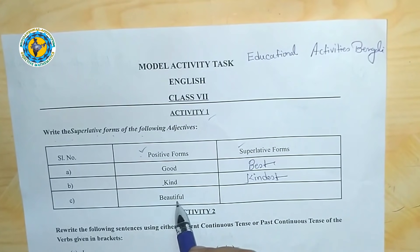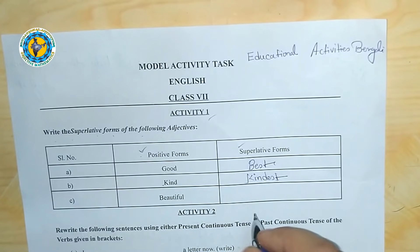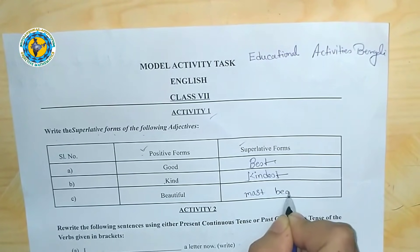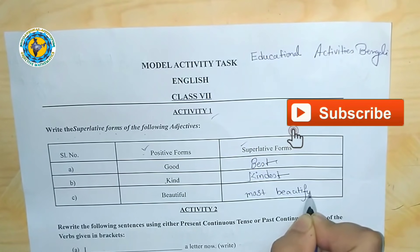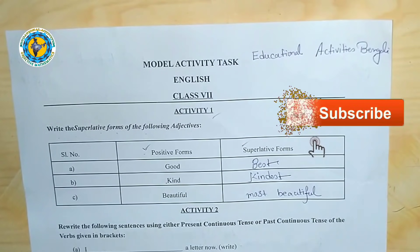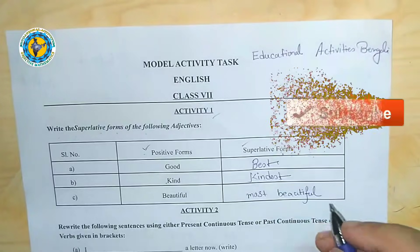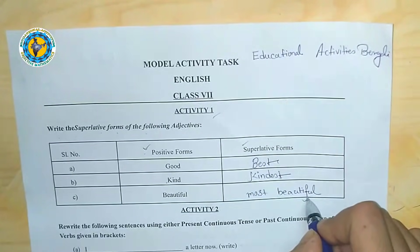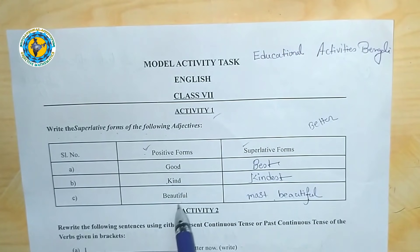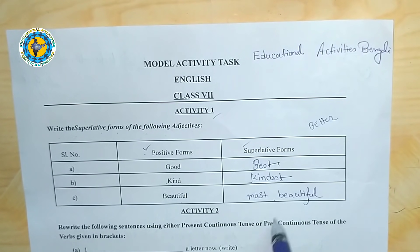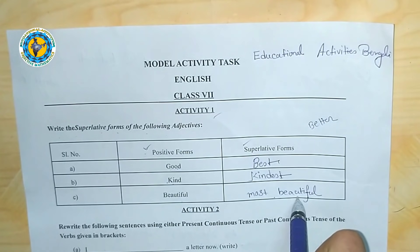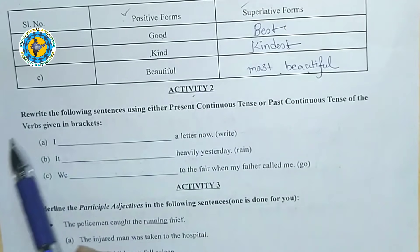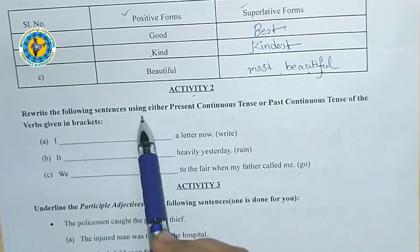Next, 'beautiful' — the comparative form is 'more beautiful' and the superlative form is 'most beautiful'. Most beautiful is the superlative form.